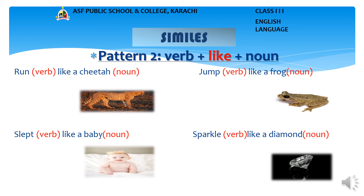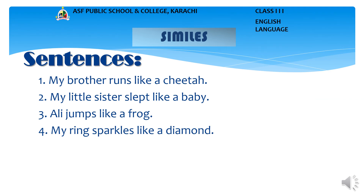Example 4: Sparkles like a diamond. In this phrase, 'sparkle' is a verb and 'diamond' is a noun. This simile uses the word 'like' to compare sparkle and diamond. Sentences using 'like': My brother runs like a cheetah. My little sister slept like a baby. Ali jumps like a frog. My ring sparkles like a diamond.